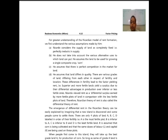For a greater understanding of the Ricardian model of rent formation, we will understand the various assumptions made by Ricardo. He considers the supply of land as completely fixed, i.e., perfectly inelastic in supply. He does not take into account the various alternative uses to which land can be put, assuming land is used for growing a single composite crop. He assumes perfect competition in the market for land, and that land differs in quality.